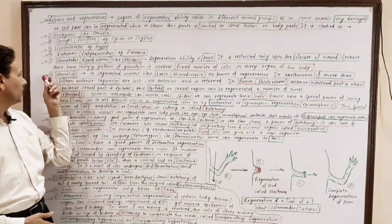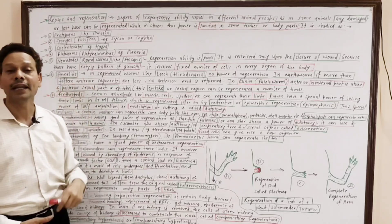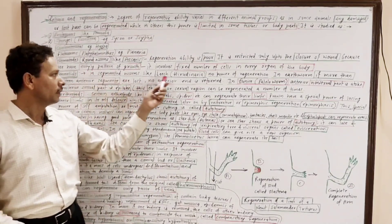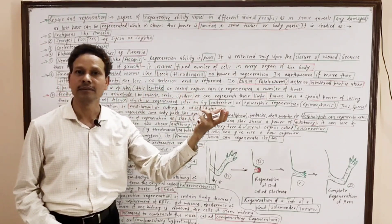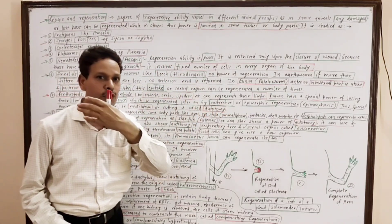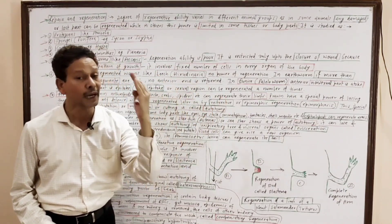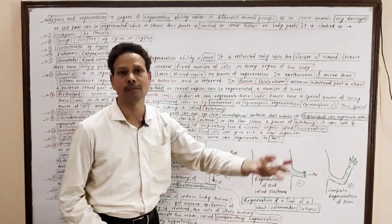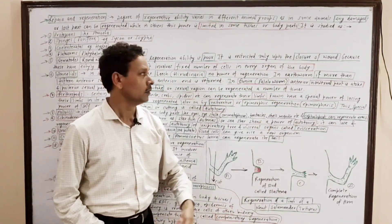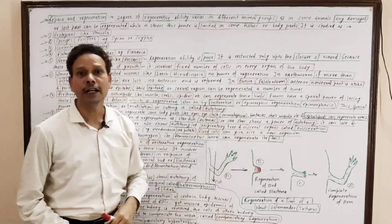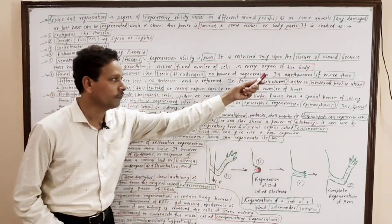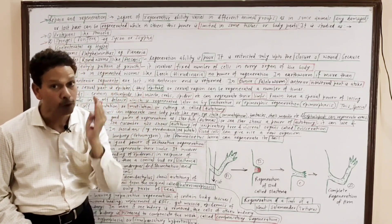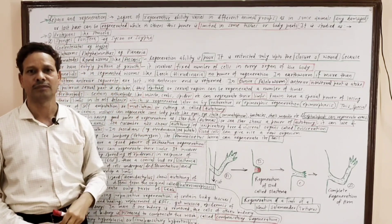In case of annelids — segmented worms like leech and Hirudinaria — there is no power of repair and regeneration. In case of earthworm, specifically Pheretima posthuma, if more than 15 anterior segments are removed, the anterior part cannot be regenerated.